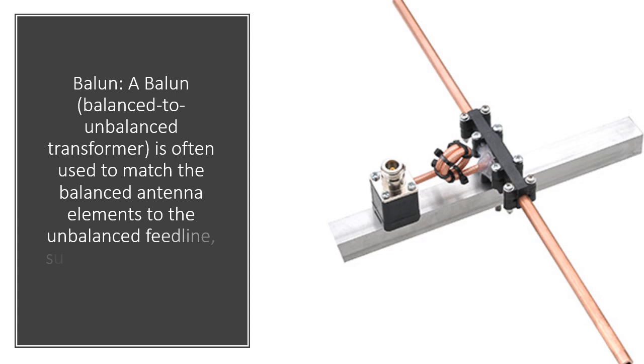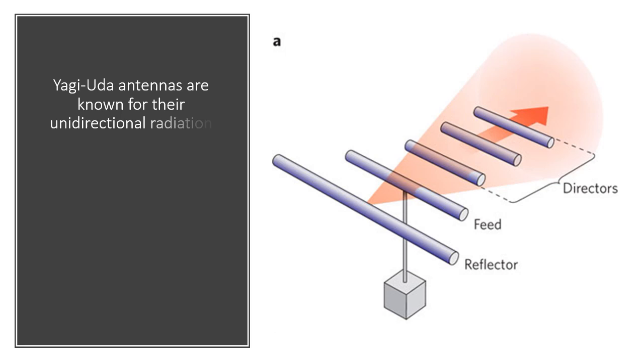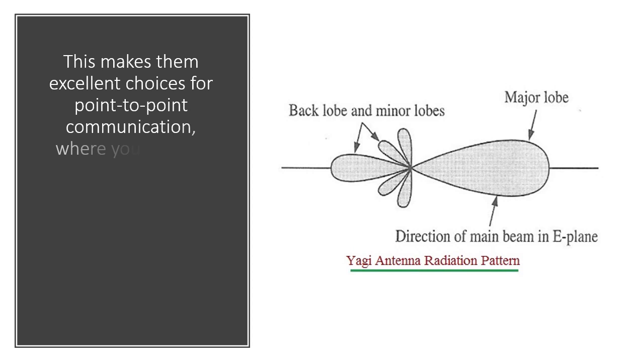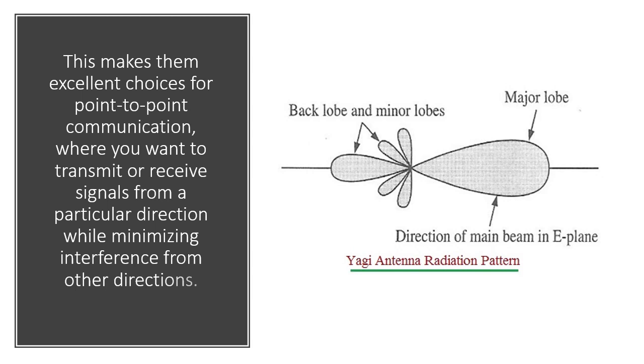Yagi-Uda Antennas are known for their unidirectional radiation pattern, which means they transmit or receive radio waves most effectively in one specific direction, often referred to as the antenna's beam. This makes them excellent choices for point-to-point communication, where you want to transmit or receive signals from a particular direction while minimizing interference from other directions.